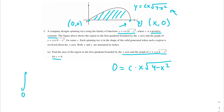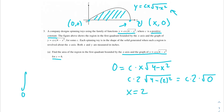What x can we plug in to make this equal to 0? Looking at the square root, what can we subtract from 4 to get 0? We can plug in x equals 2, giving us c times 2 times the square root of 4 minus 4, which is 0. So we know we intersect the x-axis at (2, 0). So our integral bounds are from 0 to 2, and we integrate 6 times x times the square root of 4 minus x squared dx, since c equals 6.